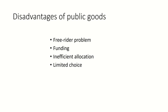Now let's talk about the disadvantages of public goods. Free rider problem: the non-excludability of public goods can lead to the free rider problem, where individuals have an incentive not to pay for the good since they can still consume it without contributing — for example, national defense or street lighting, which everyone can use without paying. Funding: the production and maintenance of public goods require significant resources, and funding must come from taxes or other forms of compulsory contributions. Inefficient allocation: the government is not always able to allocate resources efficiently, and the provision of public goods can lead to waste and inefficiency. Limited choice: because public goods are provided by the government, individuals may not have a choice in the types of goods and services provided and may not be able to consume what they prefer.